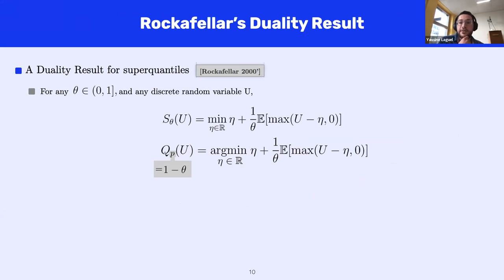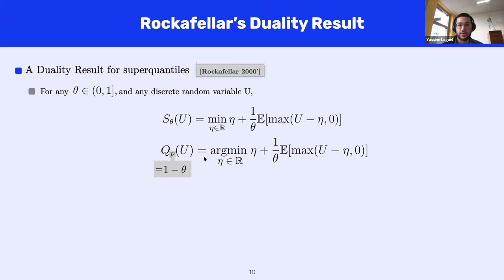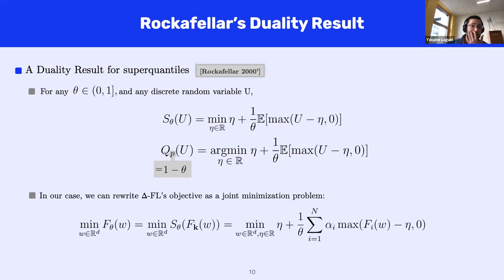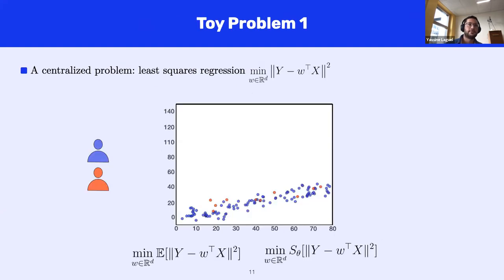A final duality result about the superquantile, due to Rockafellar, writes the superquantile as the optimal value of a one-dimensional problem. Specifically, the superquantile of U with conformity level theta is the infimum over eta of eta plus (1/theta) times the expectation of max(F_i - eta, 0). The optimal solution of this problem is a quantile of the distribution of U — the p-quantile with p equal to 1 minus theta. Going back to our problem, we get a new formulation for Simplicial FL as a joint minimization over both W and eta.